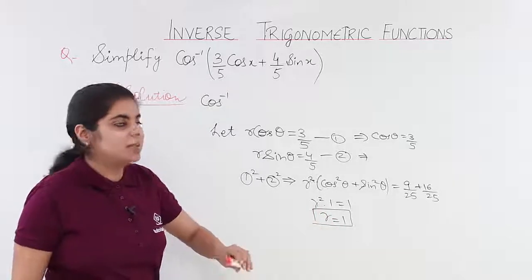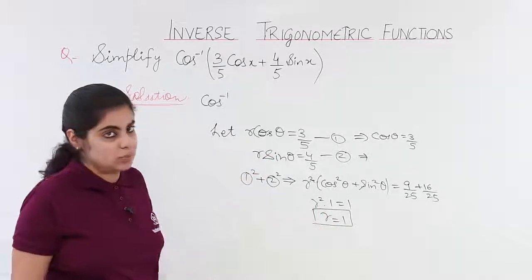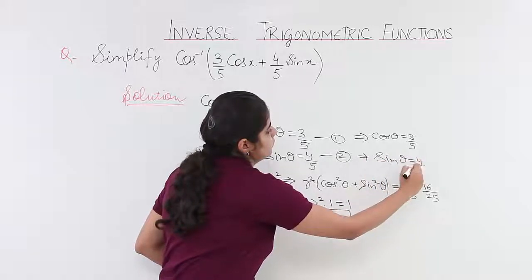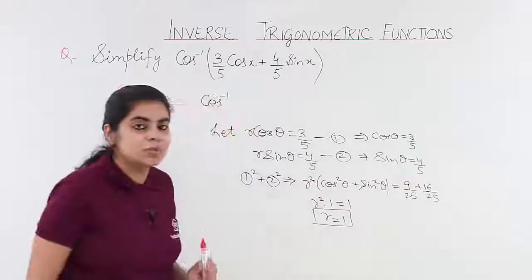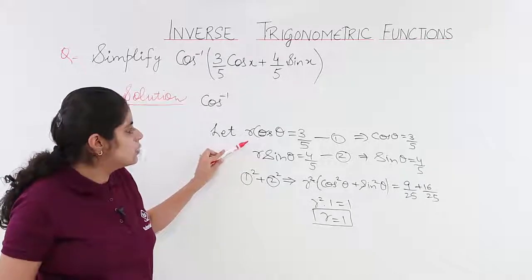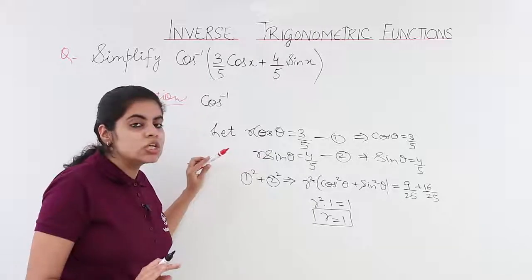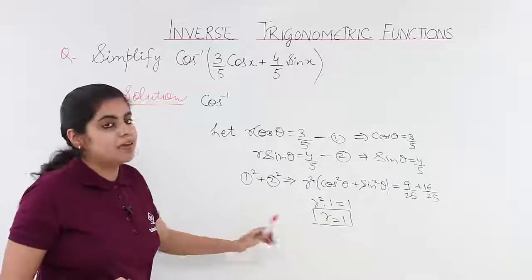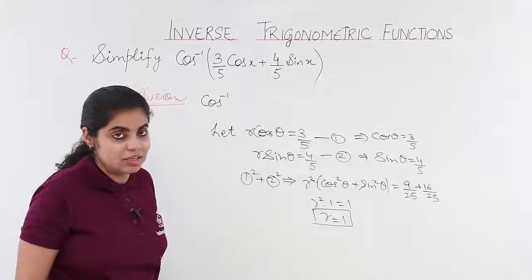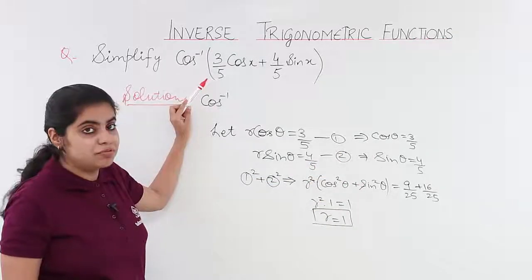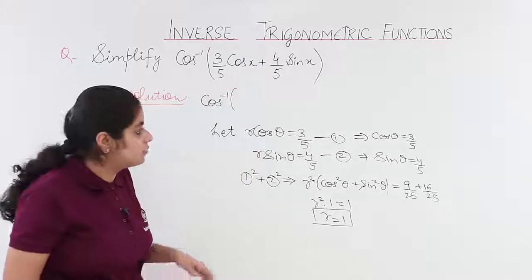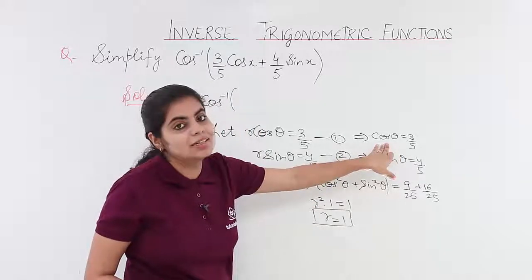Similarly, r being 1 means sin θ = 4/5. So what have we done so far? We assumed r cos θ and r sin θ values to find r = 1, giving us cos θ = 3/5 and sin θ = 4/5. Now what is the question modified to? The question is cos inverse of (3/5 · cos x + 4/5 · sin x).